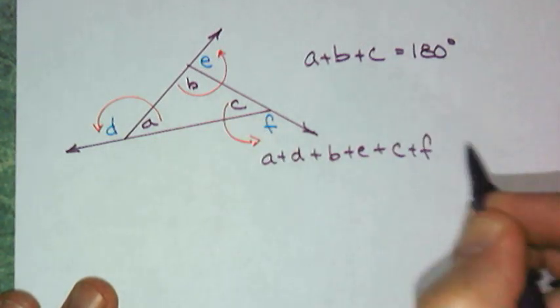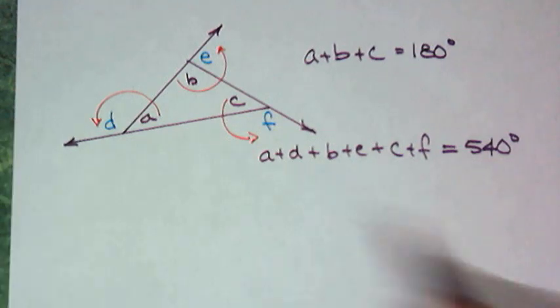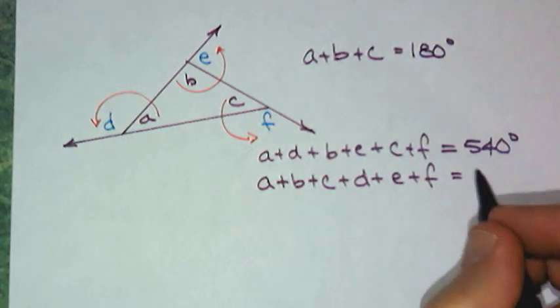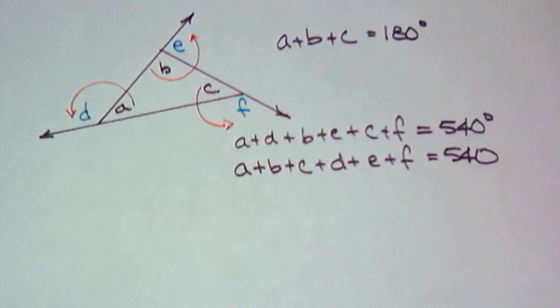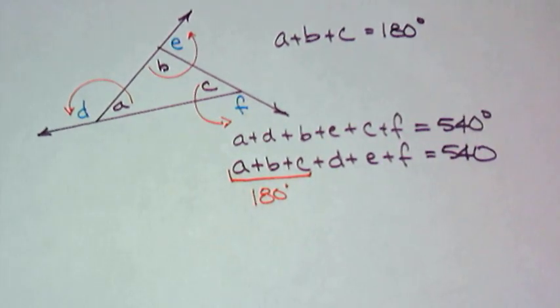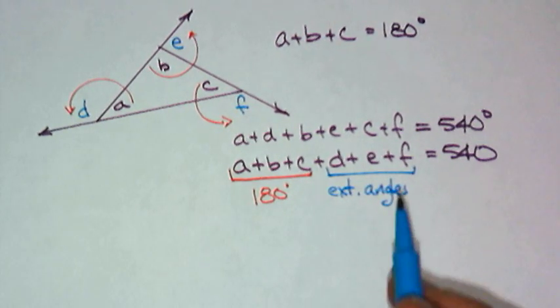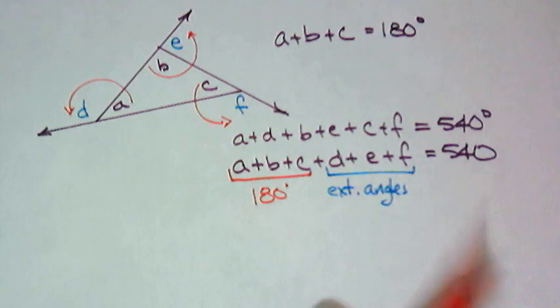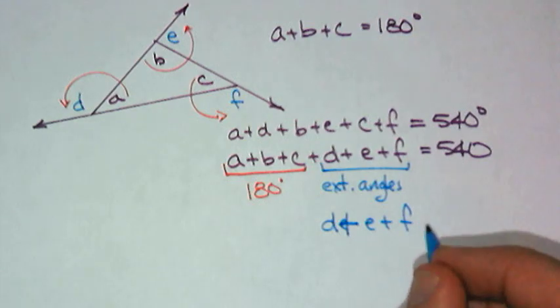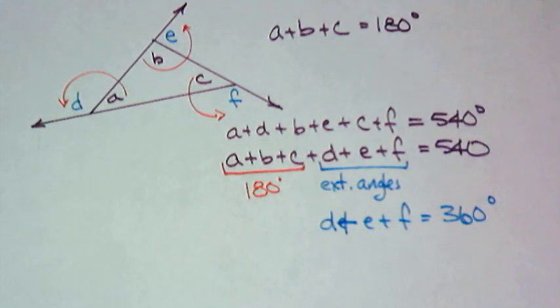Three 180s—that's 540 degrees. The commutative property says I can move these around, so I can put them in order: a plus b plus c plus d plus e plus f equals 540. Notice a, b, c are my interior angles and add up to 180. d, e, and f are my exterior angles, and if I subtract 180 from both sides, I get d plus e plus f equals 360 degrees. So for a triangle, the sum of the exterior angles equals 360.